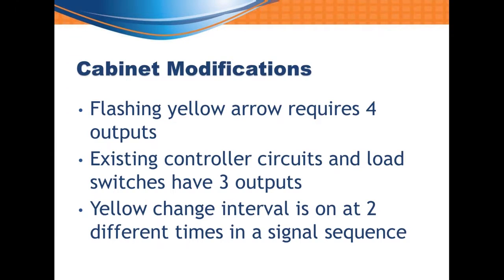Now we have to talk about the cabinets. Something that makes flashing yellow arrow unique is that each phase requires four outputs. In the past, controllers and circuits in the cabinet were designed for three outputs — red, yellow, green, or walk and don't walk for pedestrians. Now we had to create a virtual four-position load switch and controller circuit in the cabinet, which meant two different load switches doing the function of flashing yellow arrow. Also, the yellow change arrow is on at two different intervals in the sequence — after the green arrow and after the flashing yellow — so they have different requirements for what they can be on with simultaneously. This required a controller and MMU intelligent enough to handle this and keep it out of flash when the arrow came on at different times.